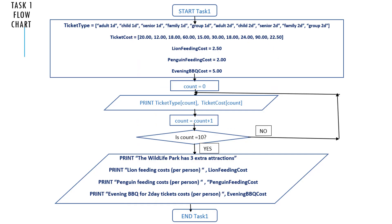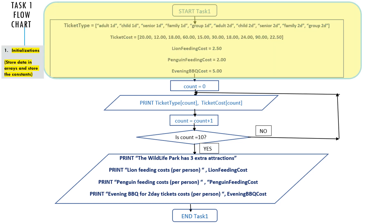Here's the flowchart of task 1. Whenever you create a flowchart, the first box is usually initializations. We initialized two arrays: ticket type, which has 10 elements, and ticket cost, which also has 10 elements. In this solution, I've also initialized three constants: lion feeding cost equals $2.50, penguin feeding cost equals $2, and evening barbecue cost equals $5.